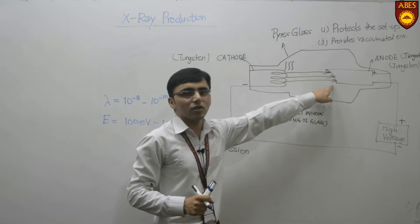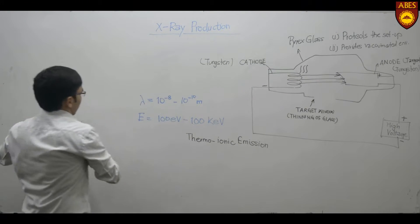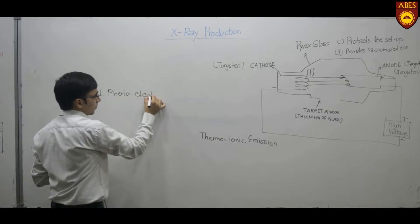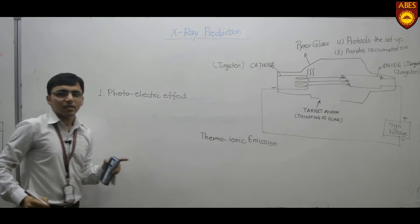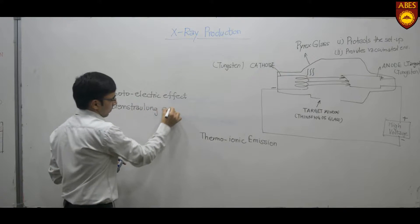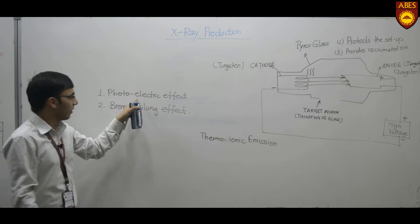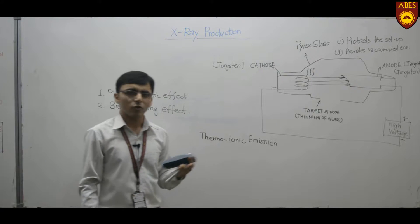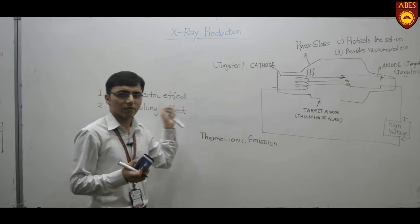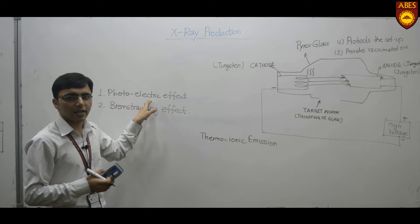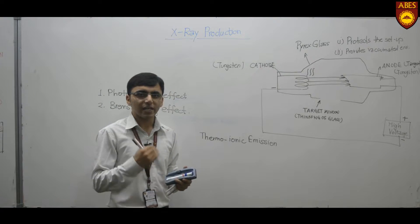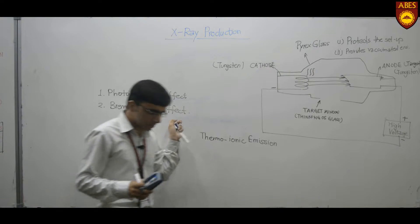As soon as the electrons hit the anode, two phenomena take place. The first one is the photoelectric effect, and the second one is the Bremsstrahlung effect. The photoelectric effect is the effect in which electrons are emitted from a surface when light falls upon it. The Bremsstrahlung effect states that when a high energy electron approaches an atom, it gets slowed down or completely stopped.